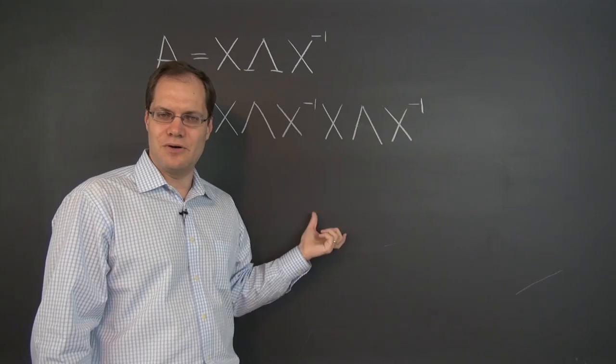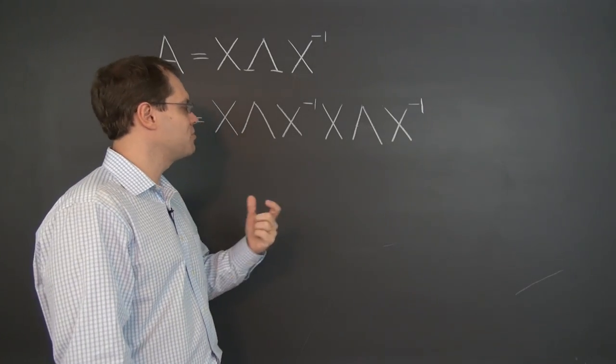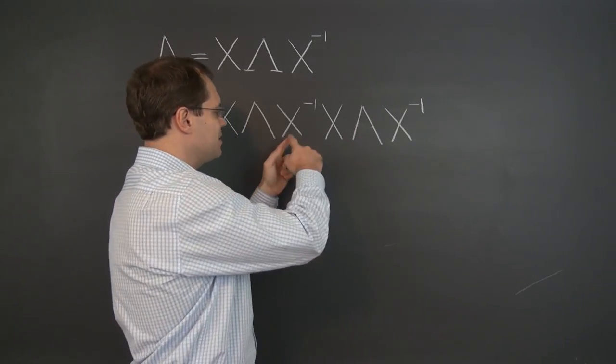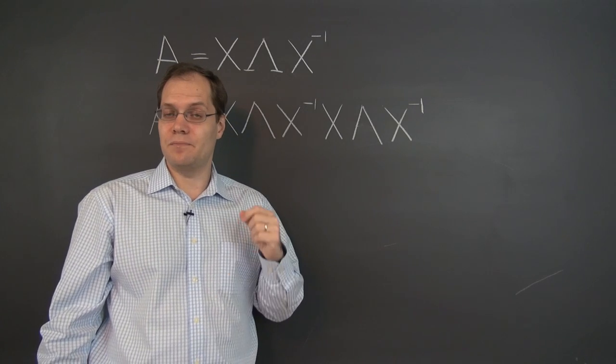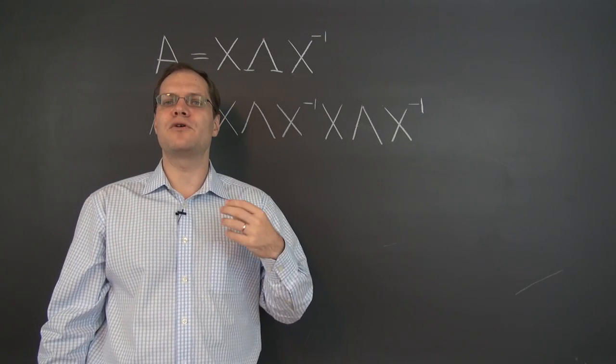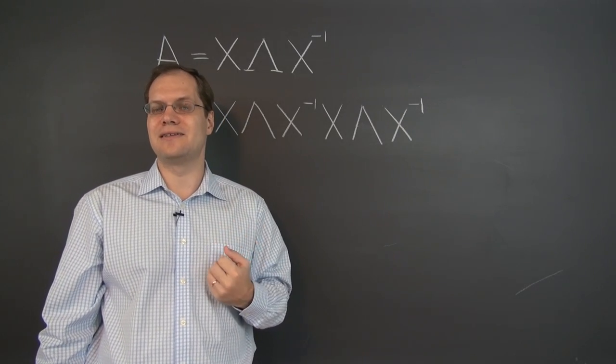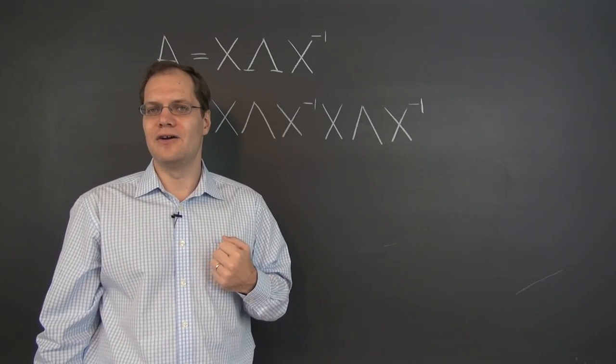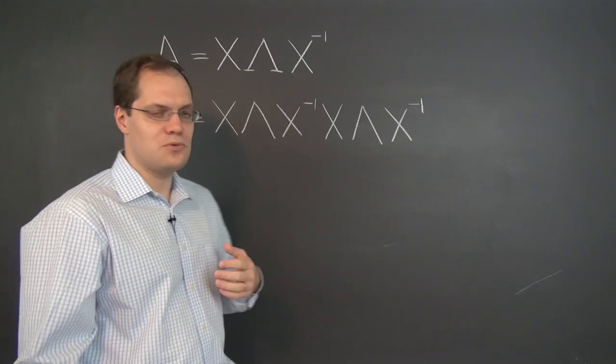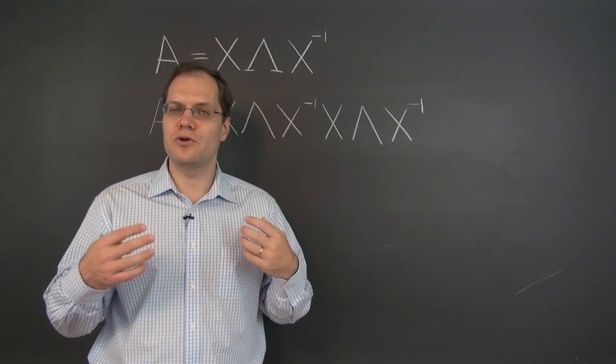So X inverse meets X, both X's drop out, both matrices drop out. Lambda meets lambda and becomes lambda squared. Of course, lambda squared is exceedingly easy to evaluate. That's another nice thing that's very satisfying. Of all matrices on the board, which one would you rather square? Well, of course, it's lambda.